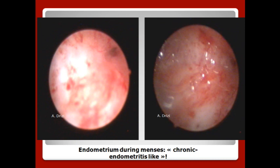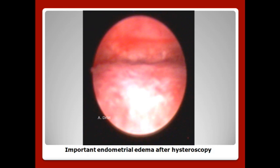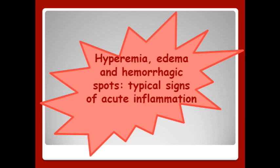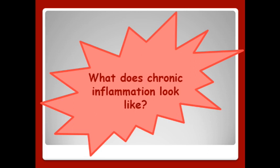Same during menses: a chronic endometritis-like endometrium; however, it is the one we observe during the acute context of menses. Another example is the important edema after some hysteroscopic procedures, which all hysteroscopists experience at times. And so, if hyperemia, red zones, edema, and hemorrhagic spots are typical signs of acute inflammation, what does chronic inflammation look like?